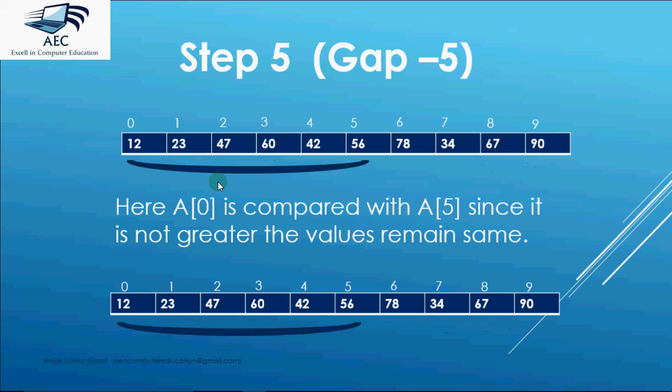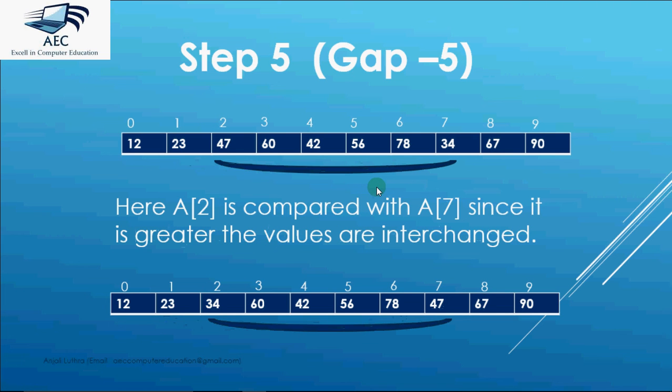Then comes step 5 which will have 5 comparisons each at the gap of 5. A[0] is compared with a[5]. No swapping required. Then a[1] is compared with a[6]. In this example we don't need a swap. A[2] is compared with a[7]. There is a swap. 34 comes here and 47 goes at a[7].